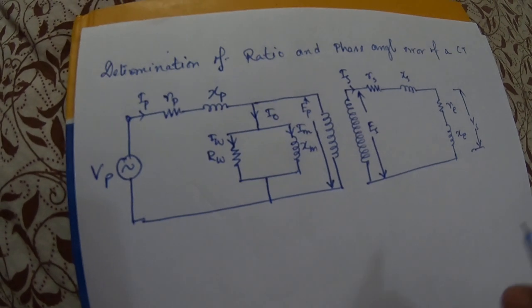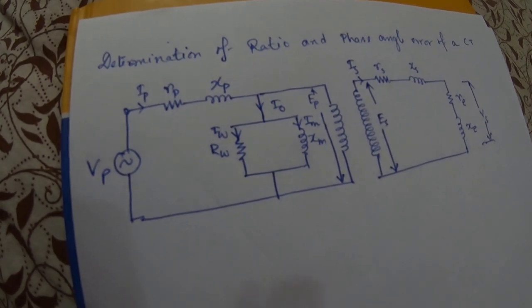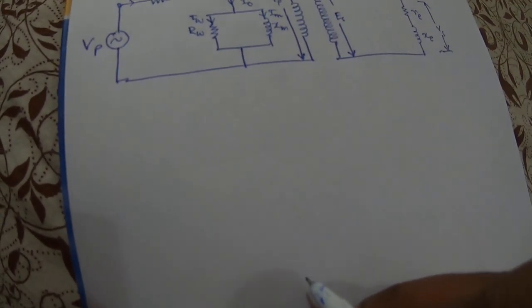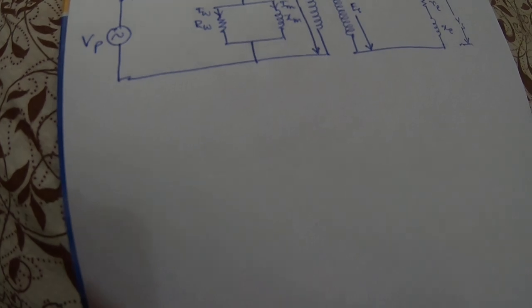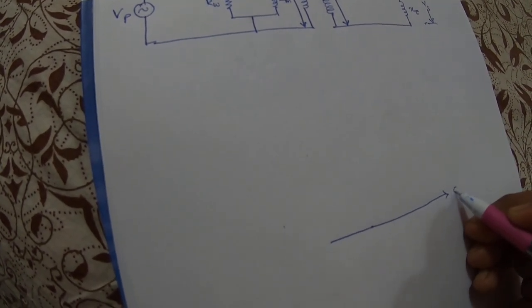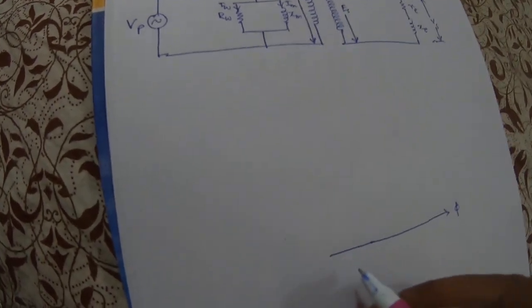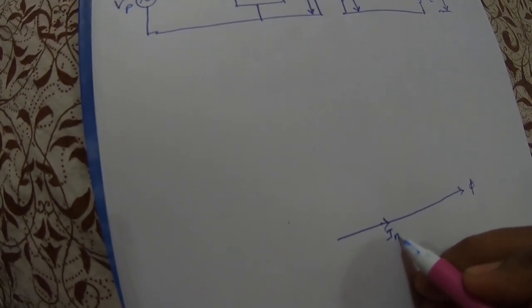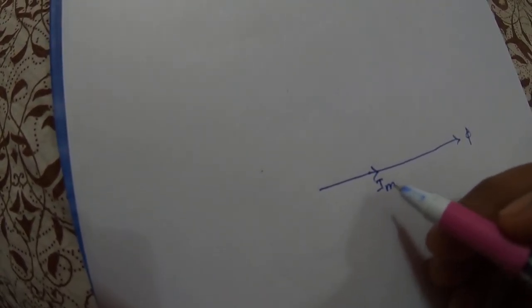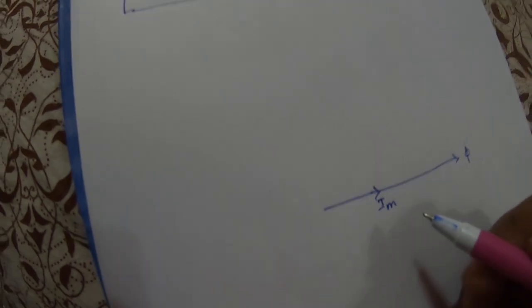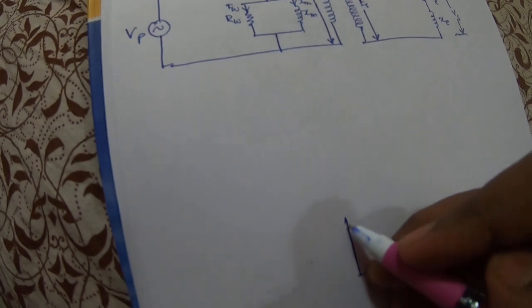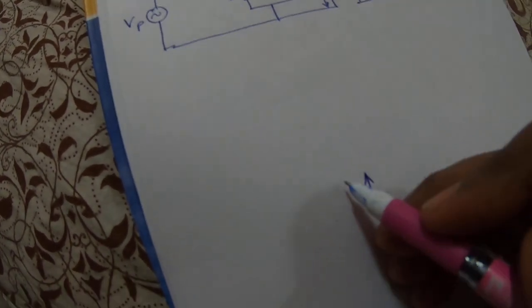When drawing the phasor diagram, we should know that the transformer works on the constant flux linkage theory. Based on this, we draw the phasor diagram with the main field flux phi along the x-axis. Along the same axis we plot the magnetizing component Im. This will be similar to the phasor diagram of the transformer at no-load condition.